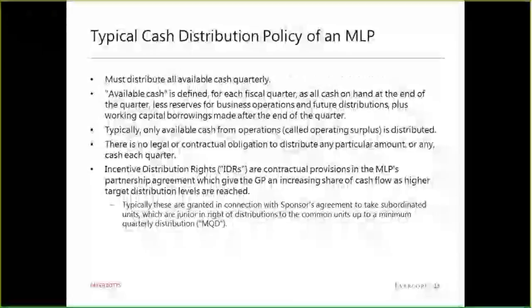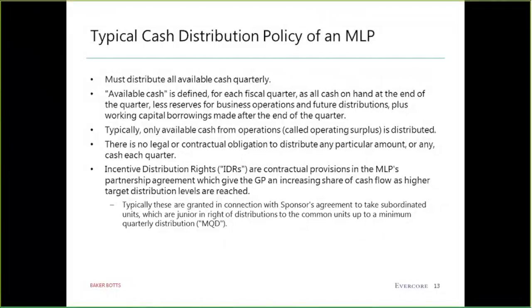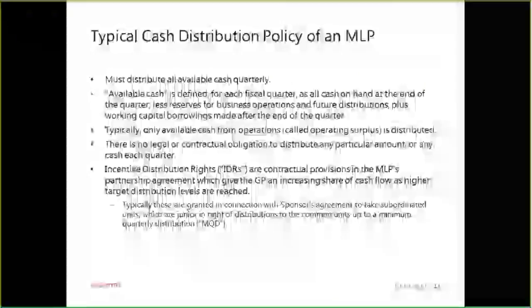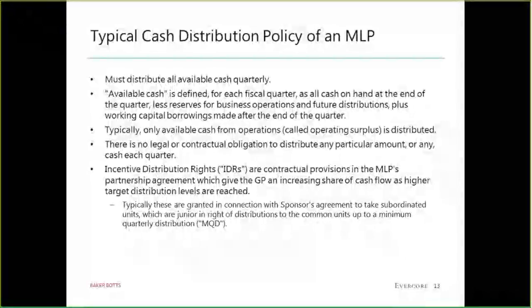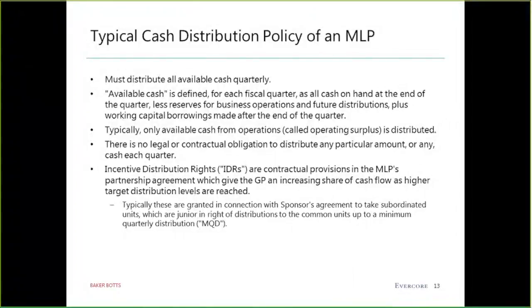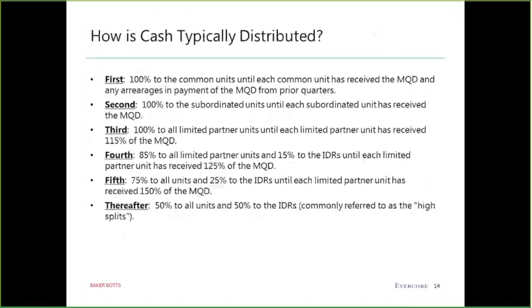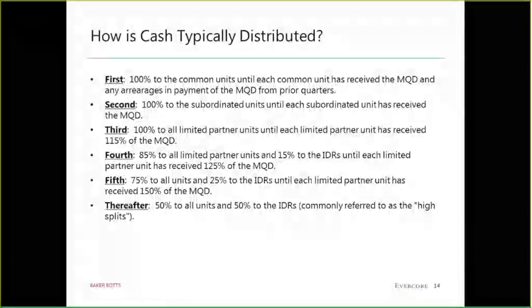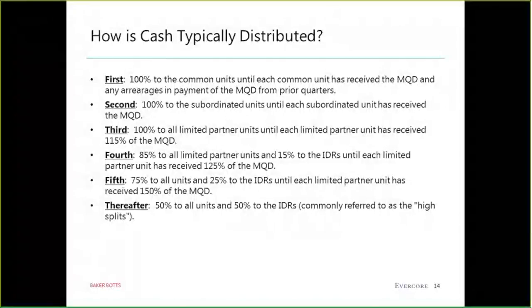One key point: when you issue additional common units, you're in effect issuing more IDRs. The IDRs have a percentage claim on total cash flow, so when you have more common units at the same distribution level, the IDRs benefit from that additional distribution. MLPs distribute cash quarterly and calculate the IDR take quarterly. IDRs are only paid from operating surplus — essentially cash from operations — and were usually granted to sponsors in exchange for the sponsors agreeing to take subordinated units at the IPO. They are sold as an incentive for the general partner to make accretive acquisitions and build the business.